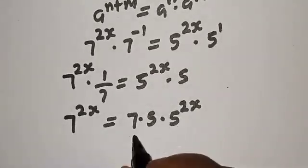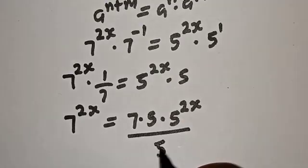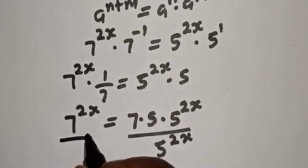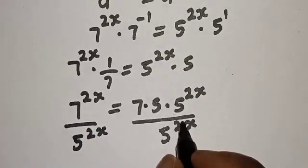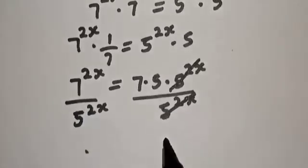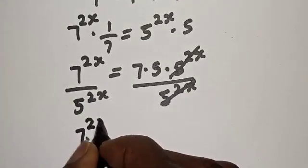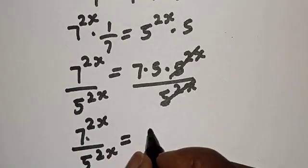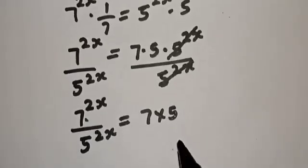Now, let's divide both sides by 5 raised to power 2s. This will cancel this. We have 7 raised to power 2s over 5 raised to power 2s is equal to 7 times 5.